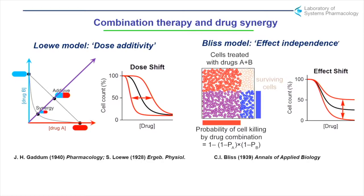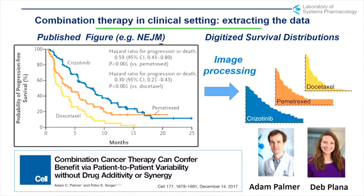We continue, like many people working in modeling cancer biology, to study this preclinically. But in the last couple of years we became interested in going back to the clinical record to ask: could we find evidence of these synergistic interactions? Here's a typical example of a combination clinical trial — individual agents in yellow and orange, then their combination giving an improved outcome — plotted as a Kaplan-Meier curve with months on the horizontal axis and progression-free survival on the vertical.